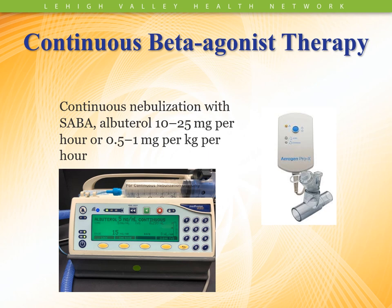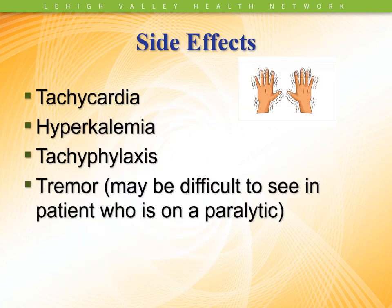One of the hallmarks is continuous albuterol therapy — usually 10 to 25 milligrams per hour or 0.15 to 1 milligram per kilogram per hour. Some are weight-based, some are volume-based. You want to use a vibrating mesh nebulizer to make sure the patient is always adequately getting the appropriate dose of medication. Sometimes it clogs up, so you've got to be careful that the medication is actually getting to the patient. The side effects of continuous albuterol include tachycardia, hypokalemia, tachyphylaxis, and tremor. Patients could have tremor and we don't see it if they end up being on a paralytic. So keep in mind that if the patient's paralyzed, you may not be able to see some of the side effects from continuous albuterol therapy.